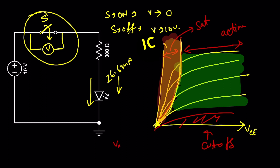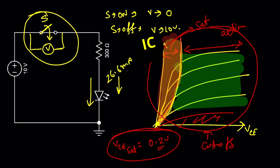We know that VCE(sat) for a transistor is around 0.2 volt — that is the minimum voltage at which the transistor can operate across the entire output characteristics. I already told you that to use something as a switch, the voltage drop across that device should tend to zero. That's why, when we need to use a transistor as a switch, we need to operate it in the saturation region.